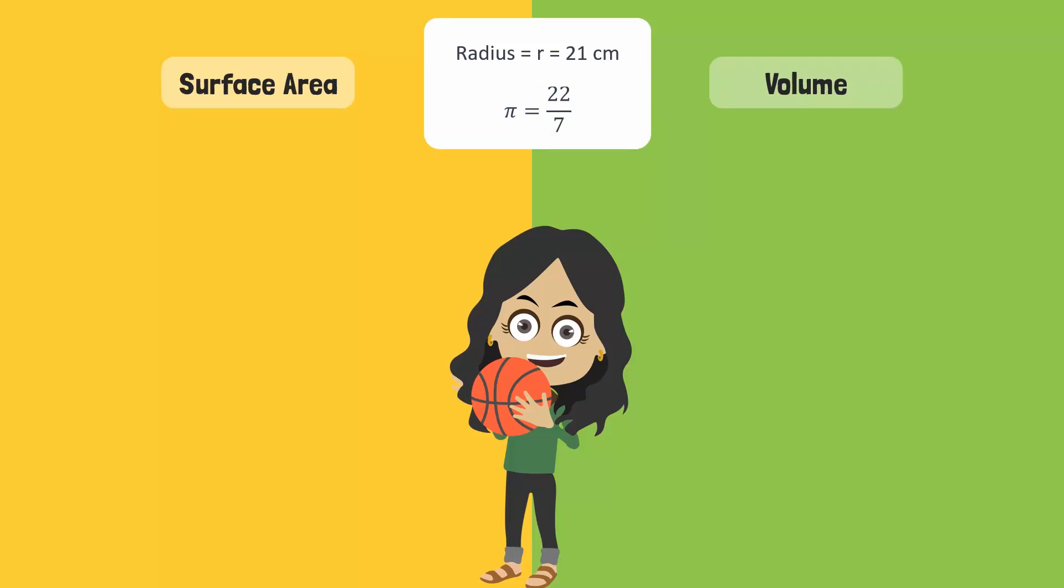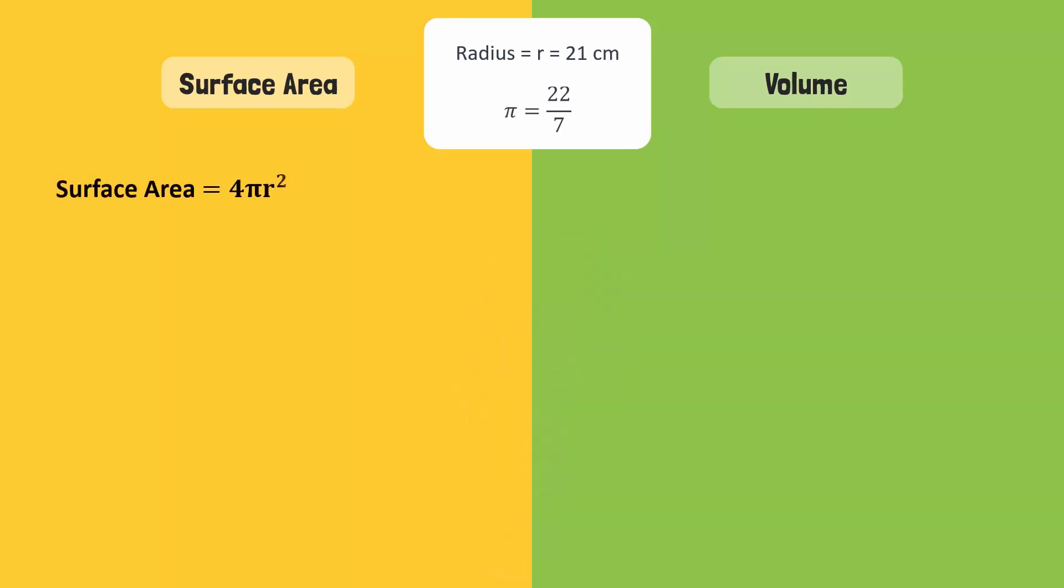So, how do we calculate the surface area and volume for this sphere? Simply by using these formulas. The surface area of a sphere is equal to 4 times pi times the square of its radius, or simply, 4 pi r squared.